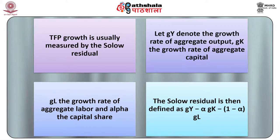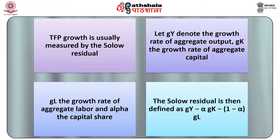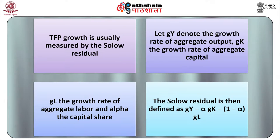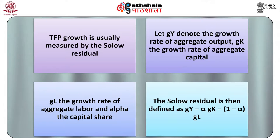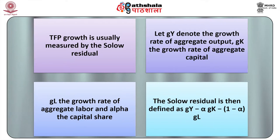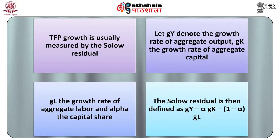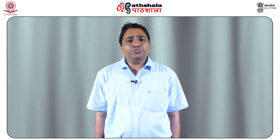TFP growth is usually measured by the Solow residual. Let GY denote the growth rate of aggregate output, GK the growth rate of aggregate capital, GL the growth rate of aggregate labour, and alpha the capital share. The Solow residual is then defined as GY minus alpha times GK minus (1 minus alpha) times GL. The Solow residual accurately measures TFP growth if: (1) the production function is neoclassical, (2) there is perfect competition in factor markets, and (3) the growth rates of inputs are measured accurately.